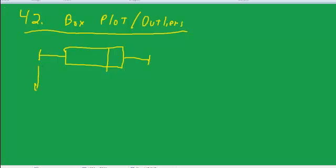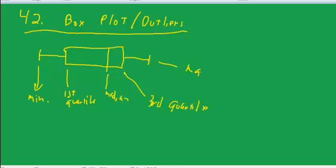There are five lines to notice. This line will be the minimum value. This line will be something called the first quartile. This will be called the median. This will be the third quartile, and this will be the maximum.